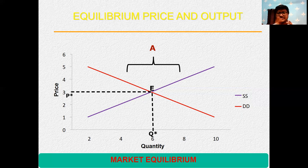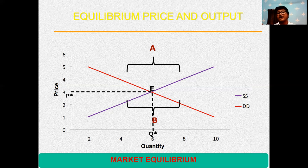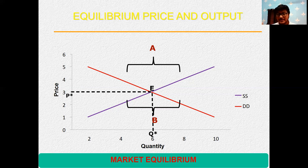At point E, we get equilibrium. Whatever the price at the equilibrium position is called the equilibrium price, denoted P-star. Whatever the quantity at the equilibrium position is called the equilibrium quantity. At equilibrium, the price is three rupees and the equilibrium quantity is six units. Area A in the diagram indicates surplus, and area B indicates shortage — because in area A, supply is greater than demand, and in area B, demand is greater than supply.